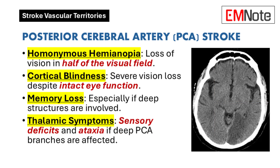Let's move now to the posterior cerebral artery. Vision is key here. Patients may experience visual field loss — they might lose half of their vision in one or both eyes, a condition called homonymous hemianopia. If the stroke affects deeper structures, it can also impact memory and cause problems with balance and coordination.